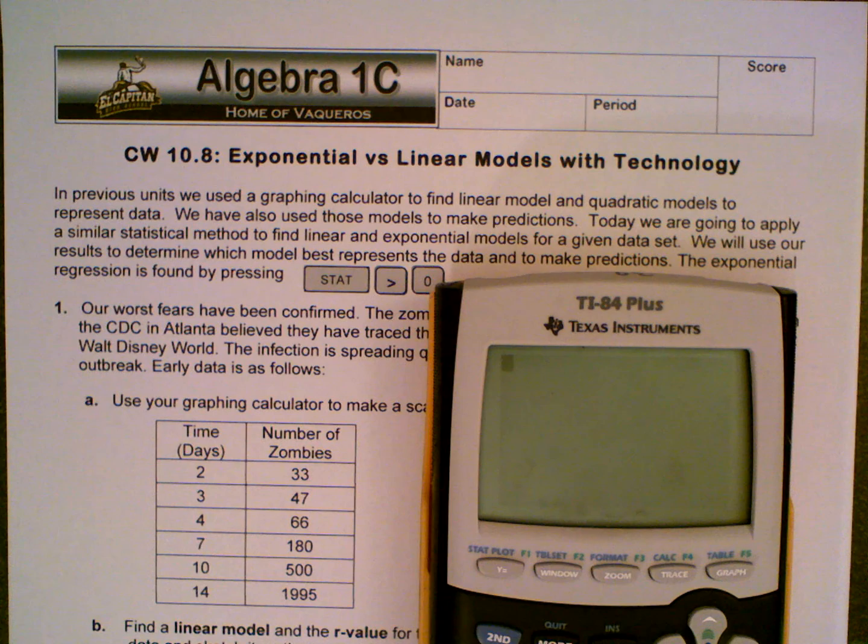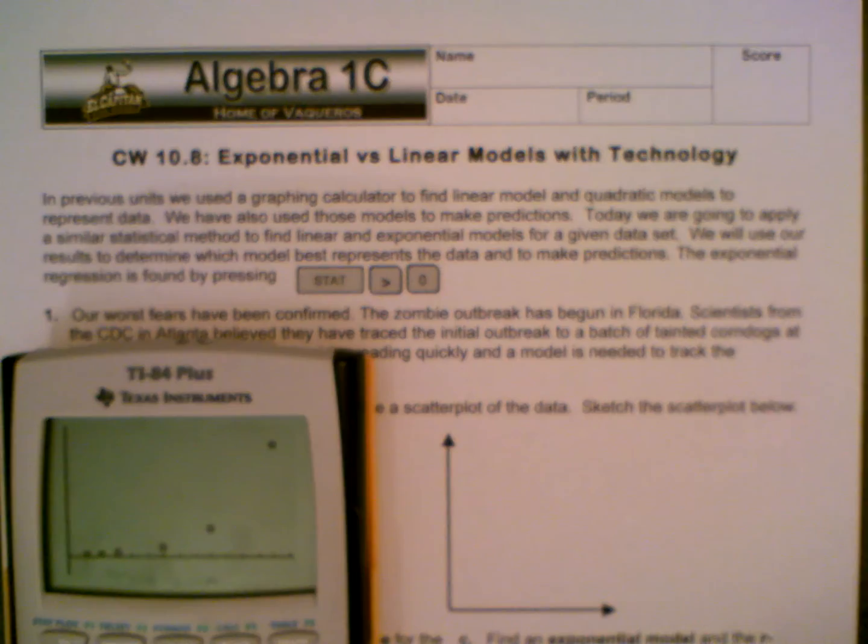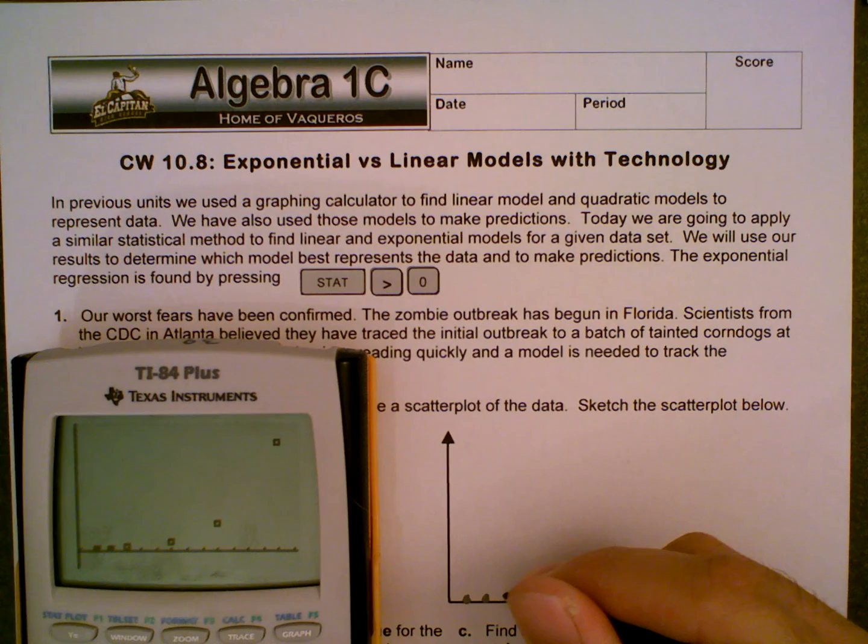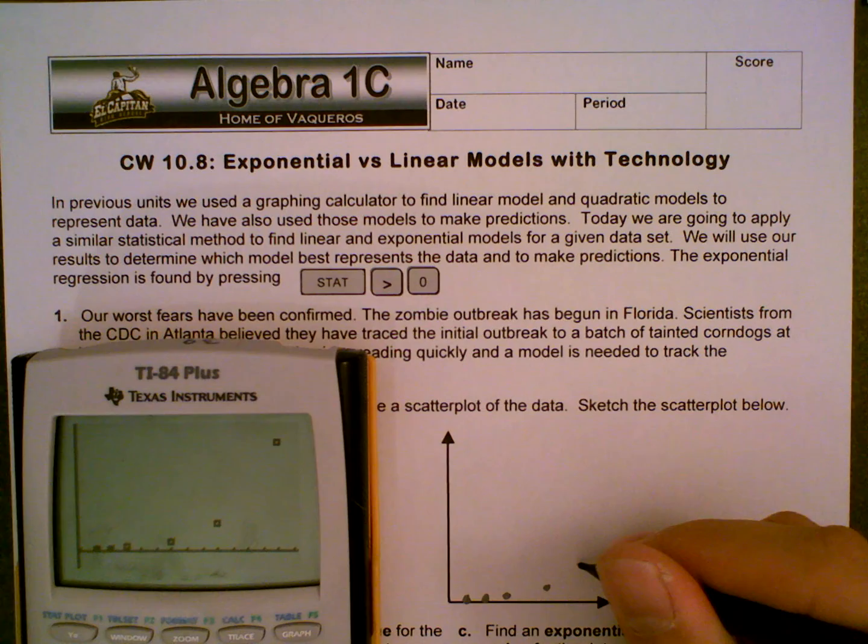Now that we have that, we need to sketch the scatterplot. So in order to sketch the scatterplot, I want to look at my graph. So I'm going to hit the graph button up here. Notice that nothing shows up. So because nothing shows up, that means I've got to zoom in on the data. So to do that, I'm going to hit zoom, 9. And then my data should display. So we want to make sure we graph those dots. There's my first one. And once you have these dots graphed, we can then answer the rest of the questions.